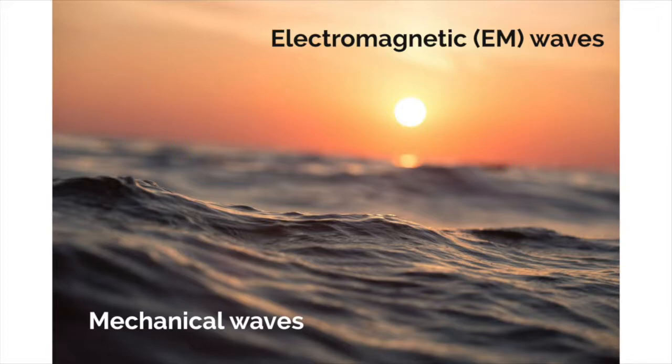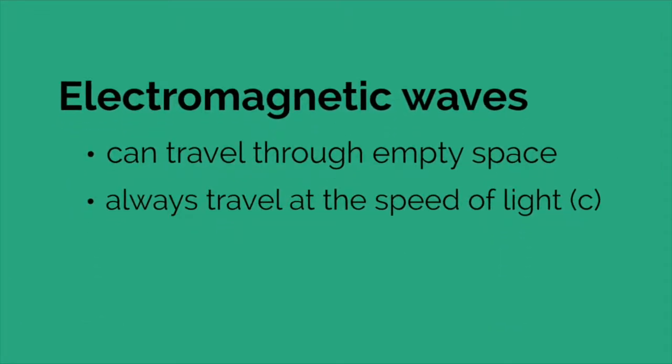Electromagnetic waves are composed of alternating electric and magnetic fields. That's where they get their name. Like mechanical waves, electromagnetic waves have a frequency and a wavelength. But there are two remarkable differences.